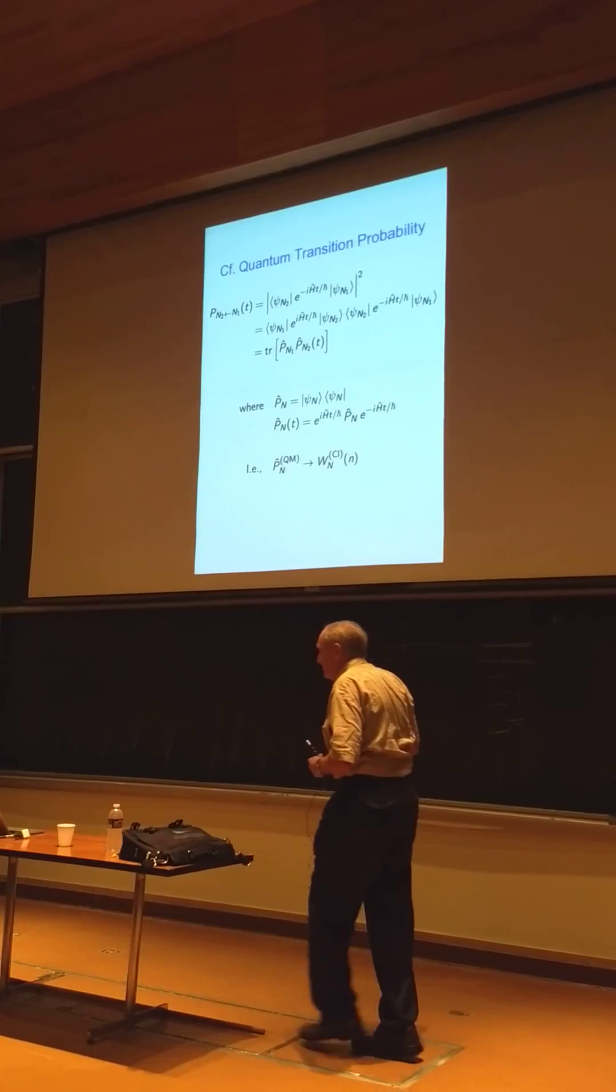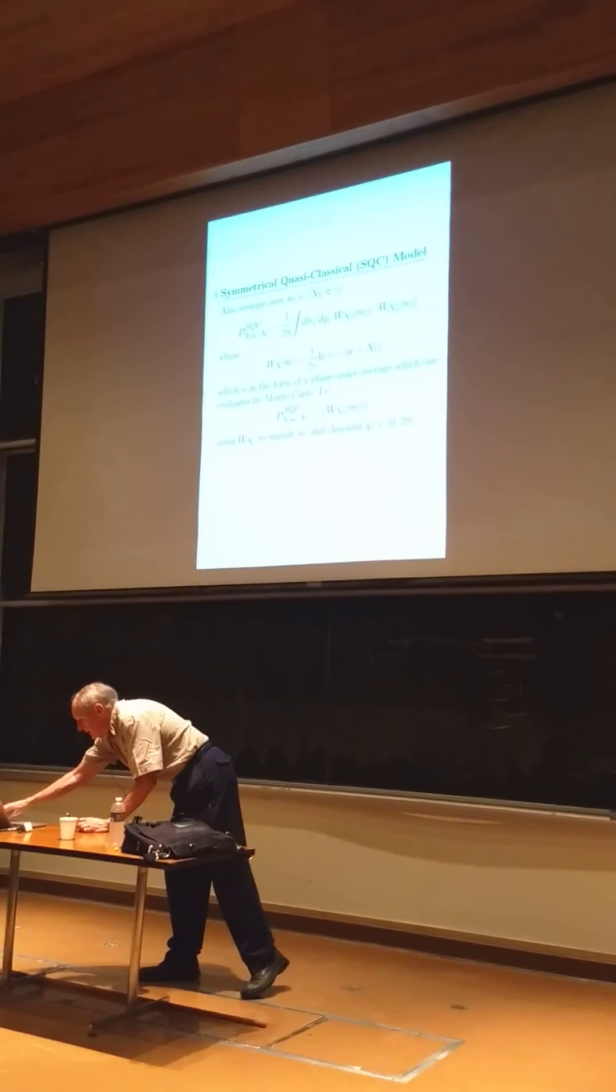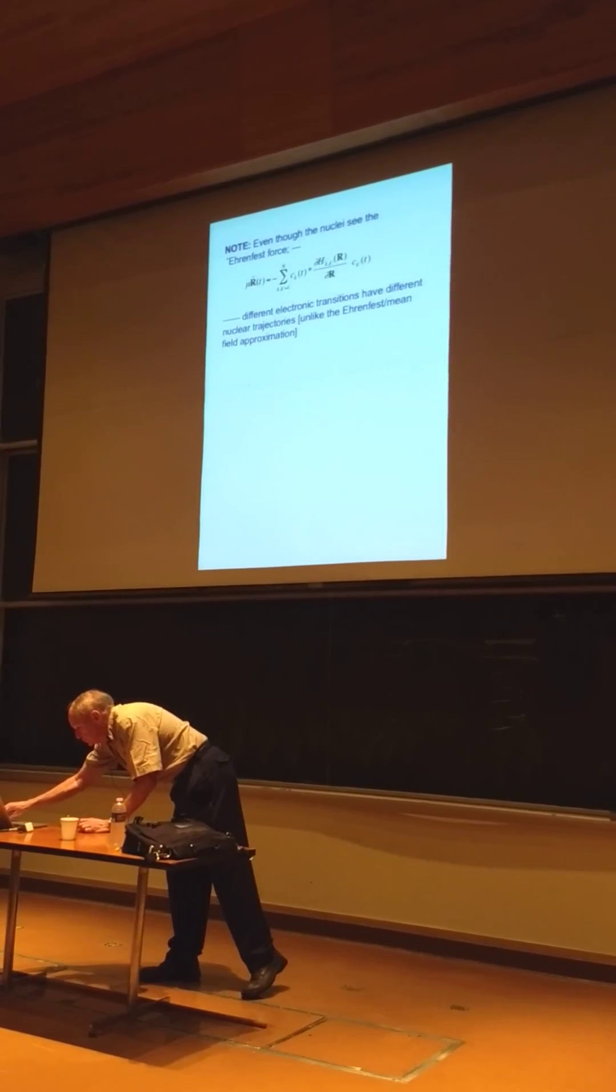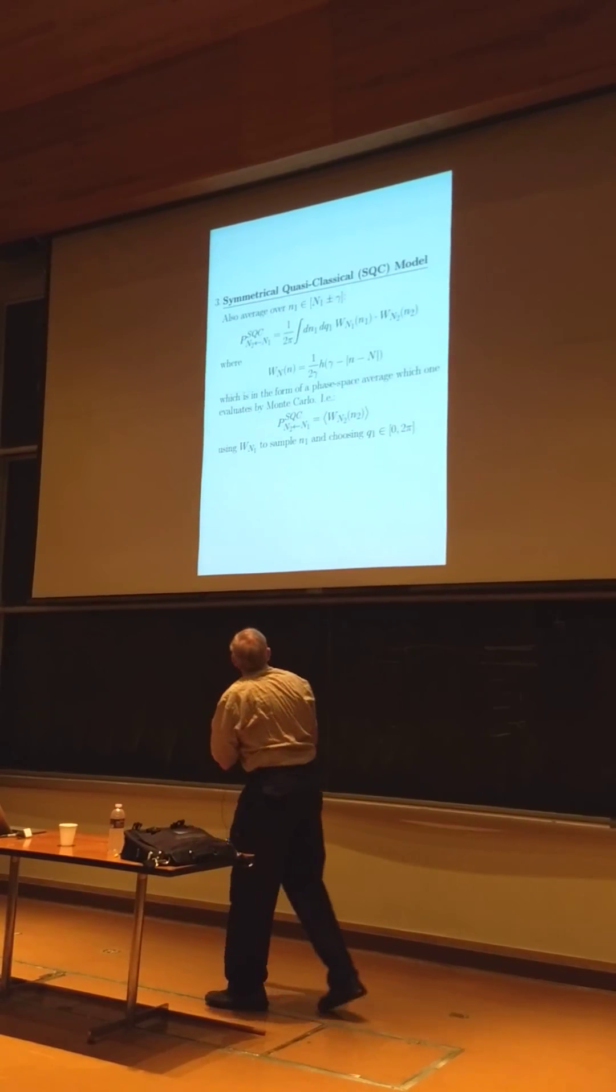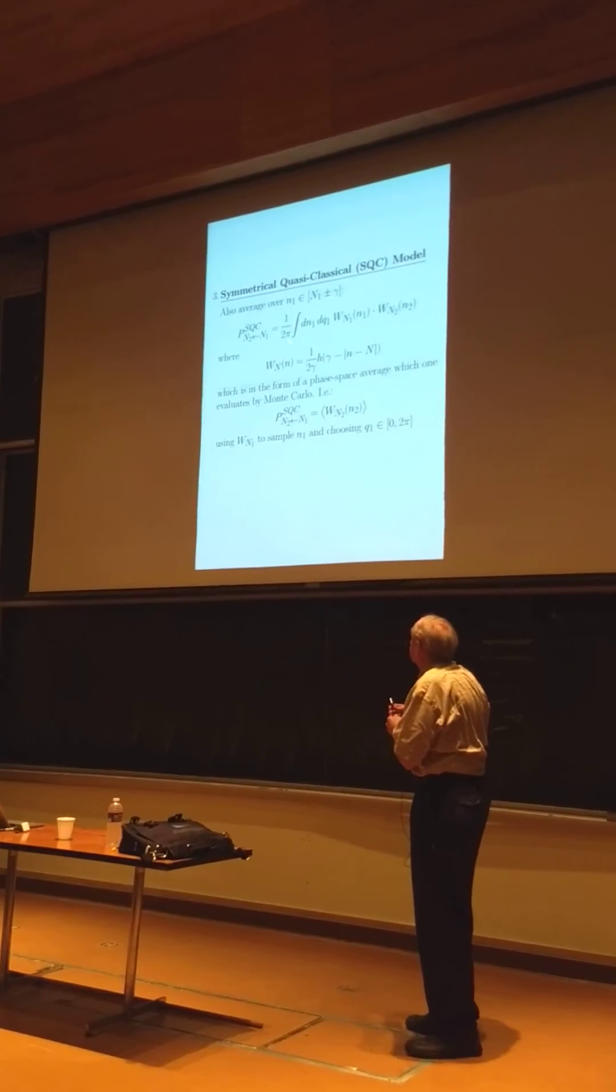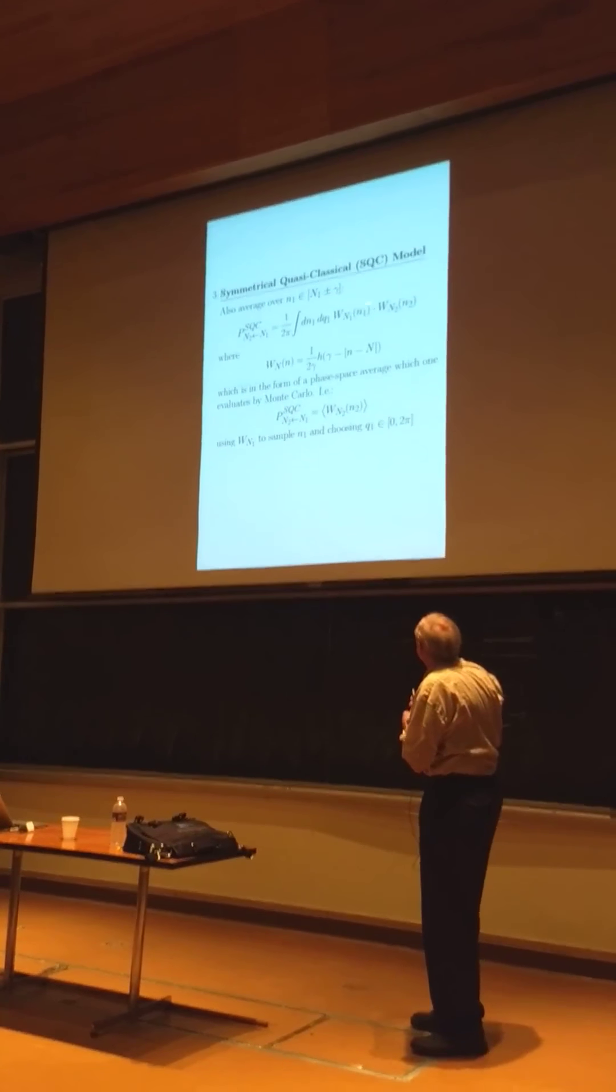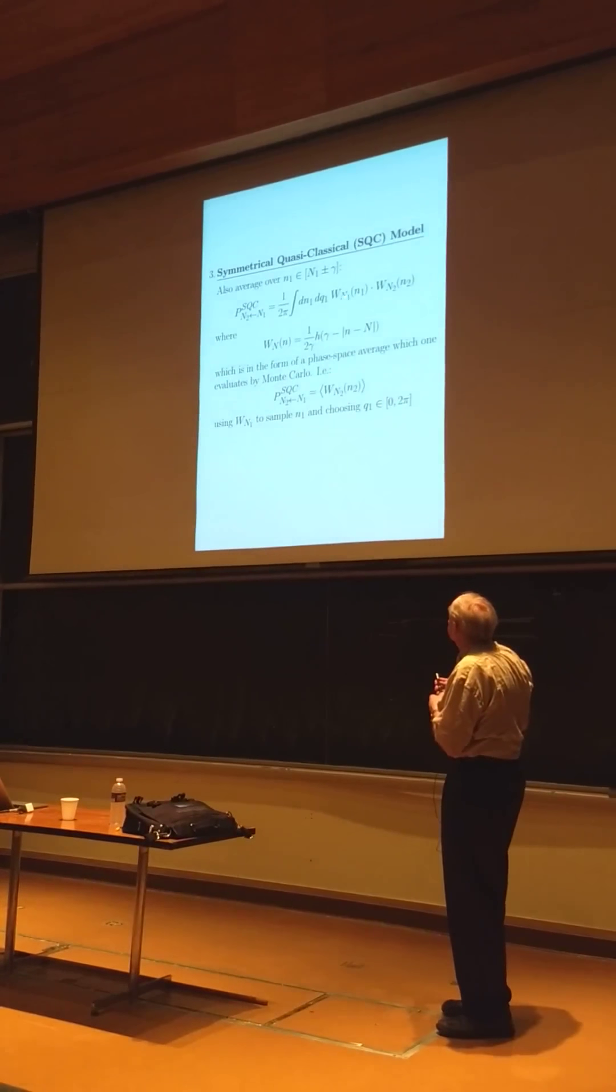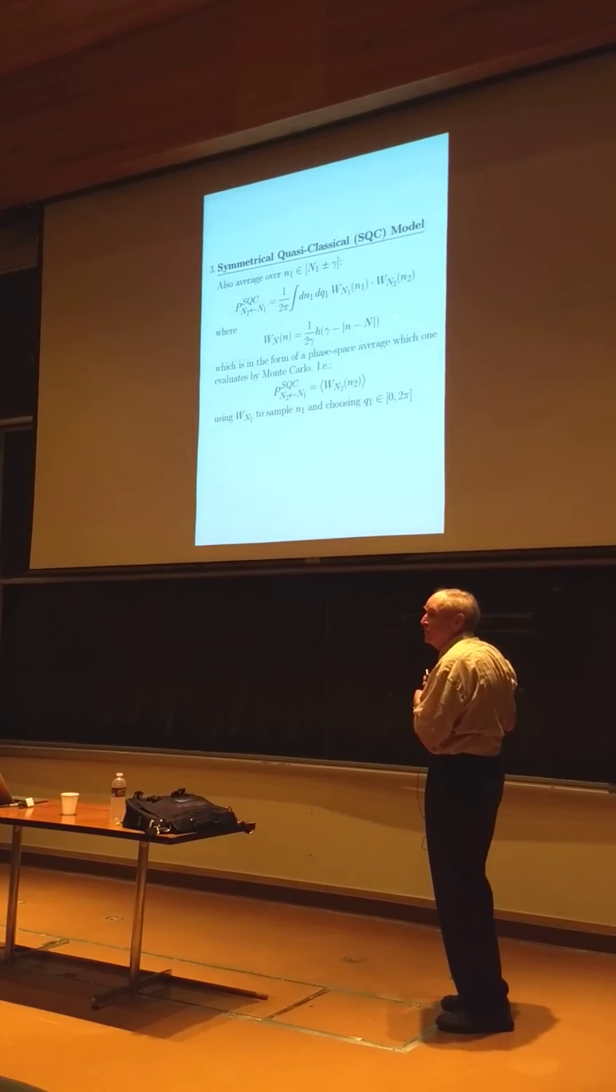And then if you bring this ket around with this bra, stick it in a trace, that's the projection operator onto the initial state. So it's a time correlation function. The initial projector at time zero, time evolved projector at time t. And now you see that's exactly the same structure as this... as this quasi... as a symmetrical quasi-classical.